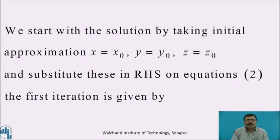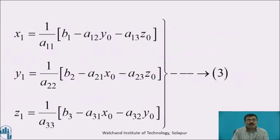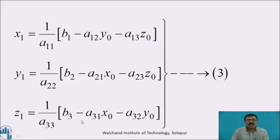We start the solution by taking the initial approximation: x is equal to x naught, y is equal to y naught, and z is equal to z naught, where the suffix 0 indicates the initial or 0th approximation. Substituting these into the right-hand side of equation 2, the first iteration is: x1 = 1/a11 × (b1 − a12·y0 − a13·z0); y1 = 1/a22 × (b2 − a21·x0 − a23·z0); z1 = 1/a33 × (b3 − a31·x0 − a32·y0). Call it as equation number 3.